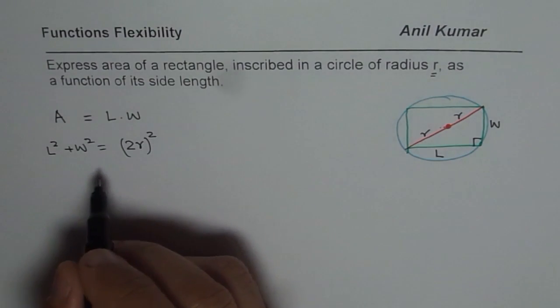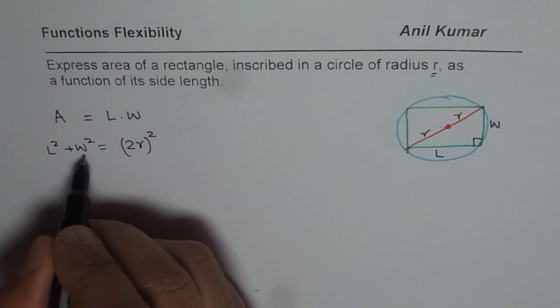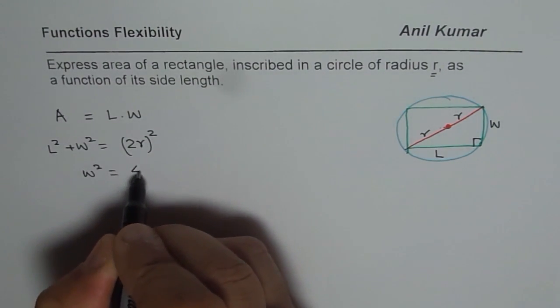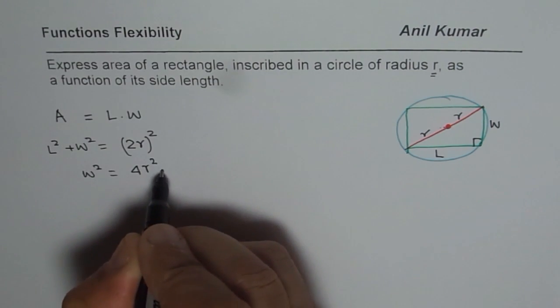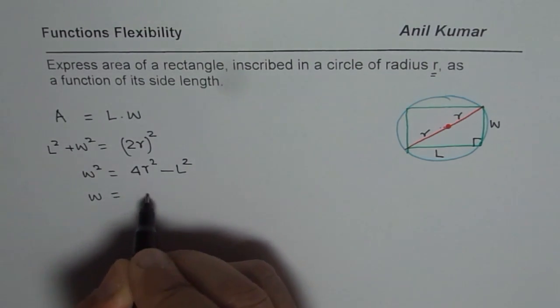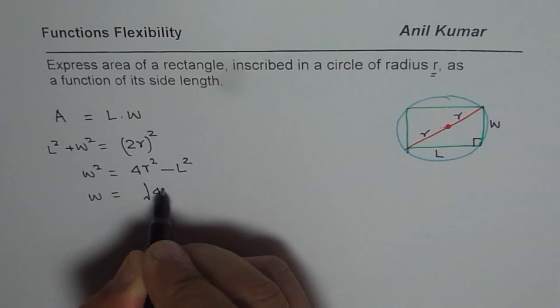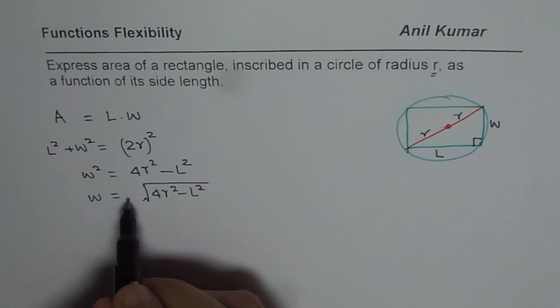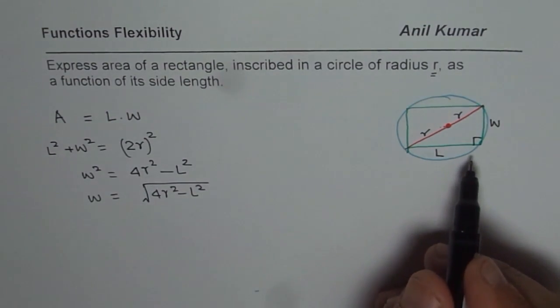So what we can do is we can rearrange the formula and we can say width square is equal to 4r square minus length square. Or width is equal to square root of 4r square minus length square. Now we will only take the positive root since dimensions are always positive. They are non-negative.